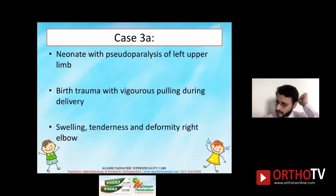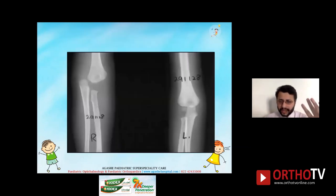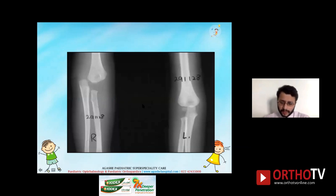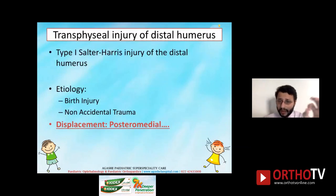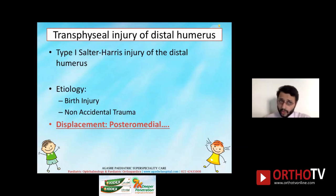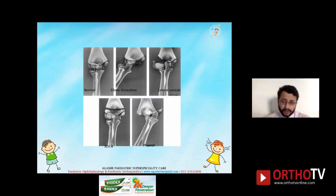E — Enigmatic Elbow. A neonate presented with pseudoparalysis of the left upper limb, birth trauma with vigorous pulling during delivery, swelling, tenderness, and deformity in the right elbow. The X-ray was reported as an elbow dislocation. But the capitulum is visible and the radio-capitellar line is completely intact, meaning the fracture or cleavage is at a more proximal level — this is a trans-physeal injury of the distal humerus, occurring with posteromedial displacement.